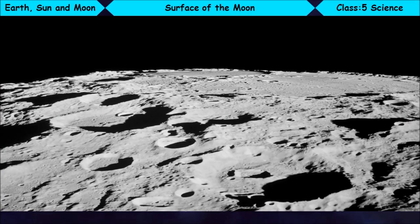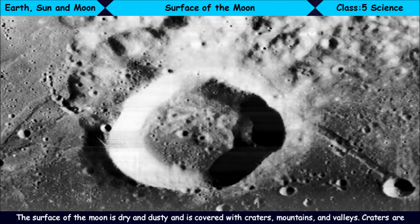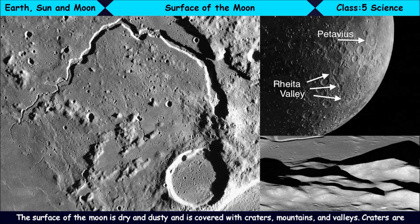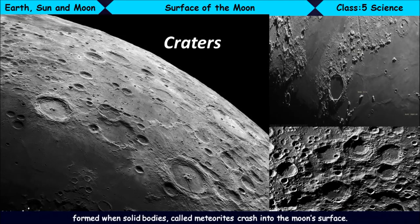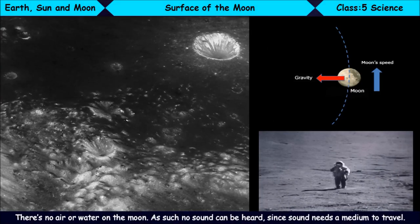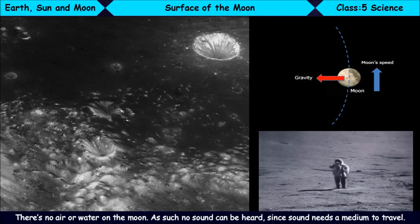The surface of the Moon. The surface of the Moon is dry and dusty and is covered with craters, mountains, and valleys. Craters are formed when solid bodies called meteorites crash into the Moon's surface. There's no air or water on the Moon. As such, no sound can be heard since sound needs a medium to travel.